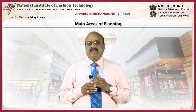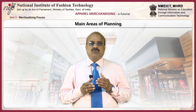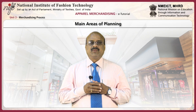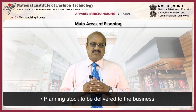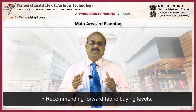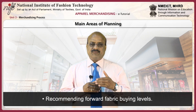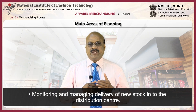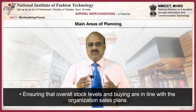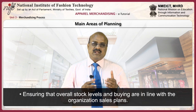The main areas of the planning activity of merchandising management rotate around planning stock to be delivered into the business and moving delivered stock around the business. Planning stock to be delivered to the business involves the following activities: analyzing historical sales patterns and trends, recommending forward fabric buying levels, recommending forward garment buying levels, monitoring and managing delivery of new stock to the distribution centre, and ensuring that overall stock levels and buying are in line with the organizational sales plans.